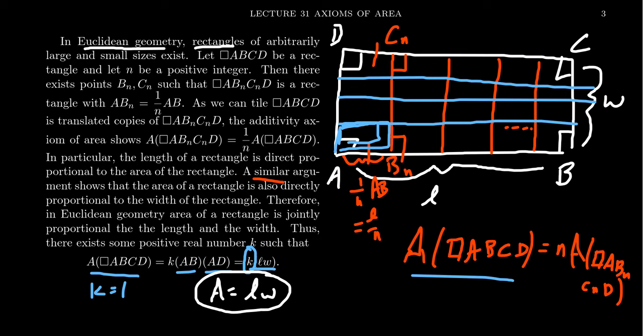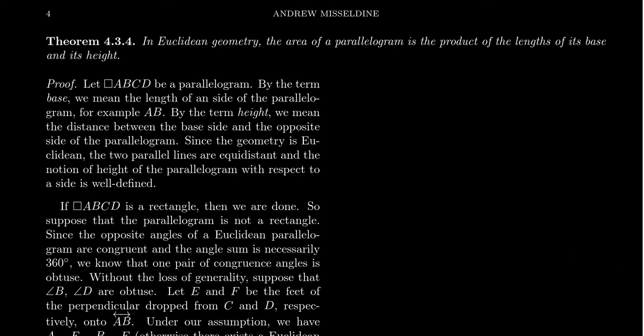Because of these proportionality arguments in Euclidean geometry, the area of a rectangle has to be length times width. This could be taken as equivalent to the Euclidean parallel postulate. From this important formula — the area formula of a rectangle — we can recapture all of the usual area formulas of polygons and other geometric shapes: the area of a right triangle, a standard triangle, a parallelogram, a trapezoid, and anything else. I want to illustrate this by showing that the area of a parallelogram equals the product of its base and its height.